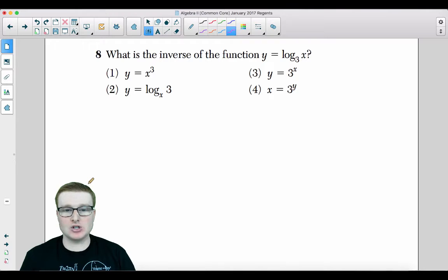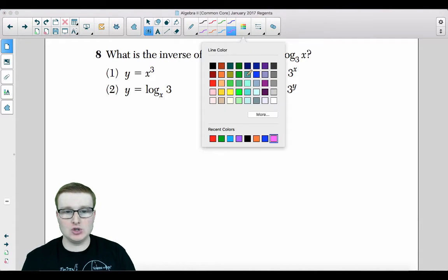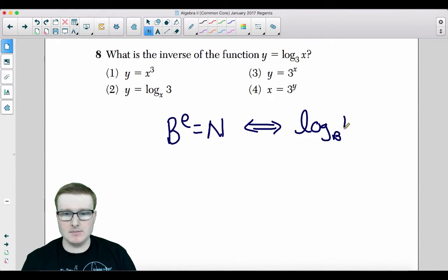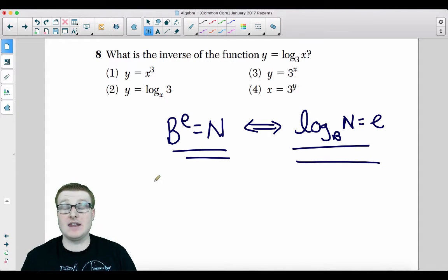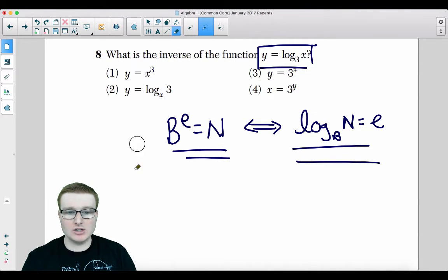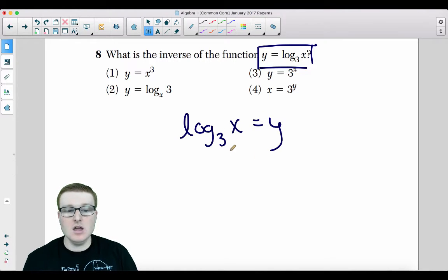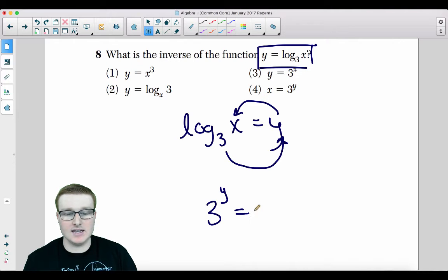Number eight, what is the inverse of the function y equals log base three of x? So by now, you should know this general concept. b to the e equals n can be switched with log base b of n equals e. So what does this mean? An exponential function is the inverse of a logarithm. So to take a log and put it into exponential form, we are going to loggy loop it. I call it loggy loop. So to express the inverse first is we need to take 3, raise it to the y, and set it equal to x.